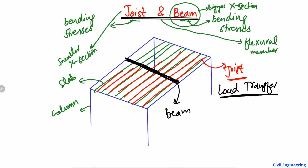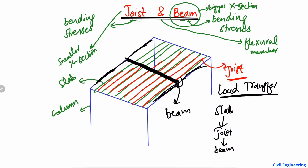Now, looking at the load transfer mechanism: first the load acts on the slab, then from the slab the load goes to the joists — the small cross-section members. Then from the joists, the load is transferred to the beam. This horizontal beam then transfers the load to the outer beams on either side.